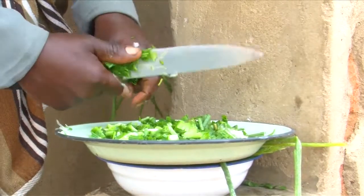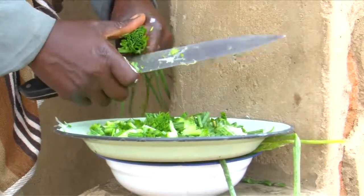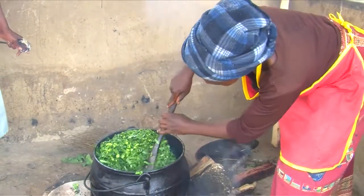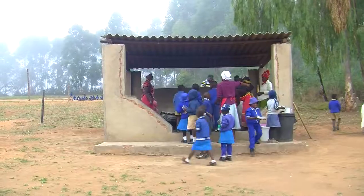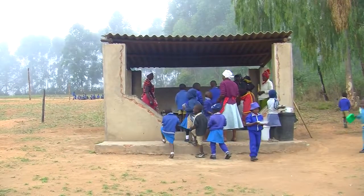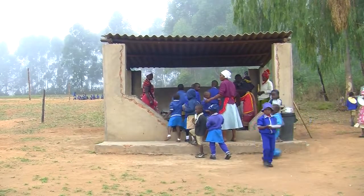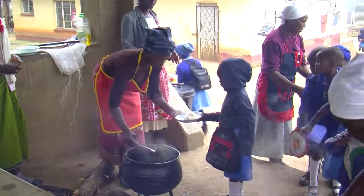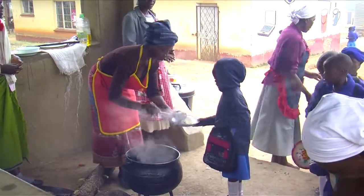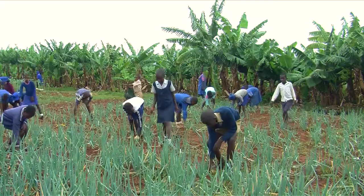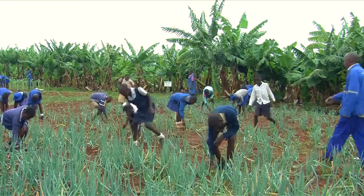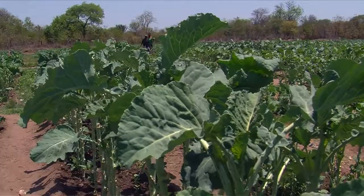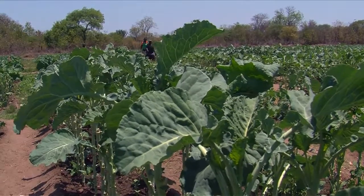Schools in the four pilot districts of the community-based multi-sectoral model for stunting reduction are implementing school feeding initiatives, where they provide at least one meal a day to pupils. As a way of providing balanced meals, they are encouraged to ensure that the gardens from which they get relish are producing diversified crops.